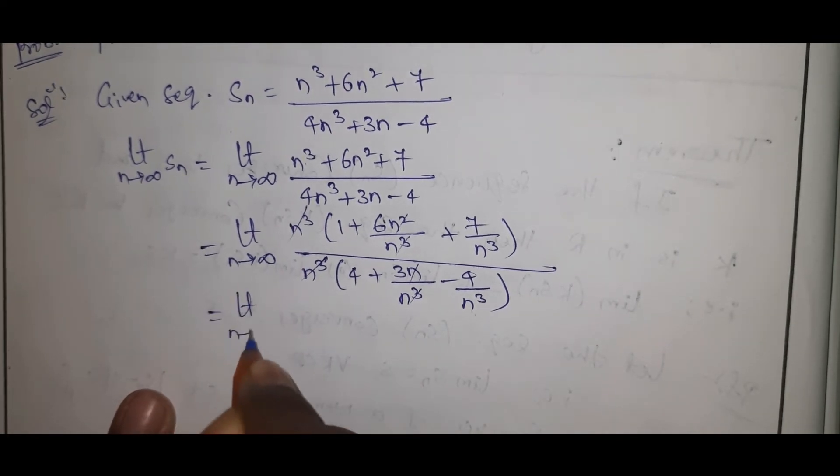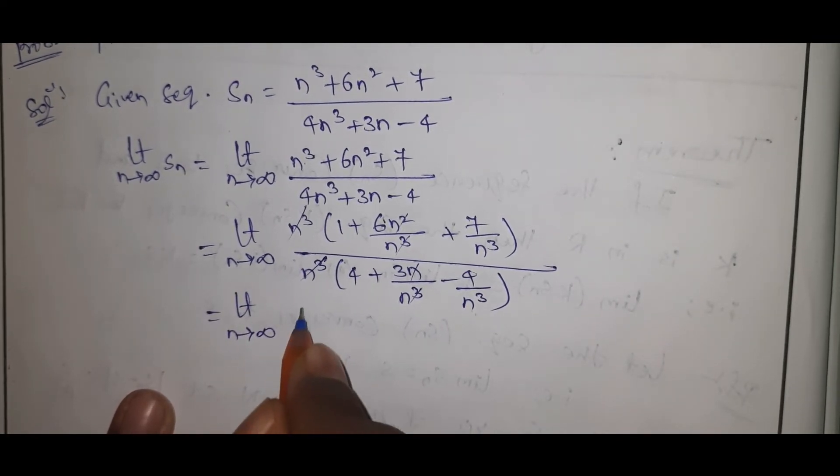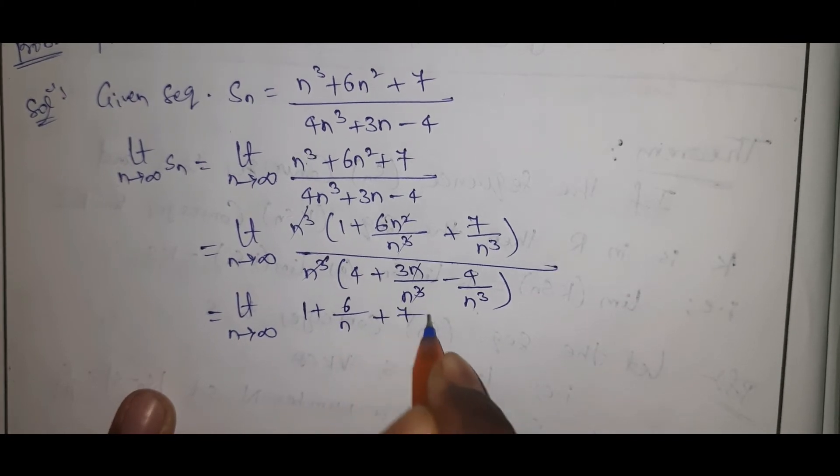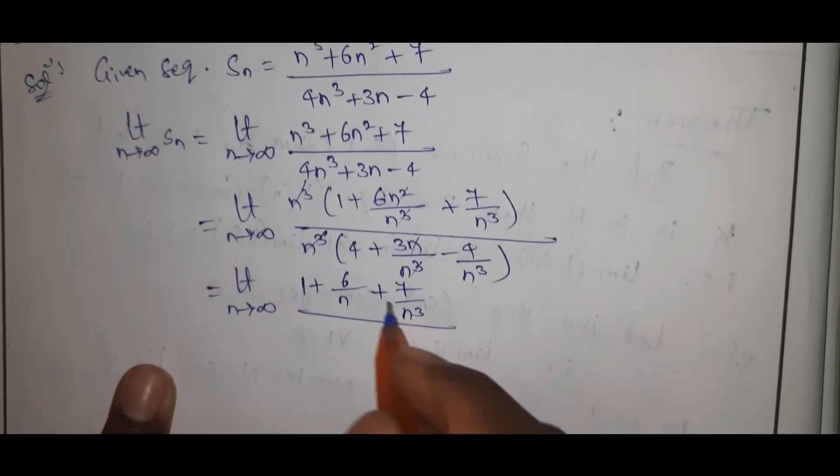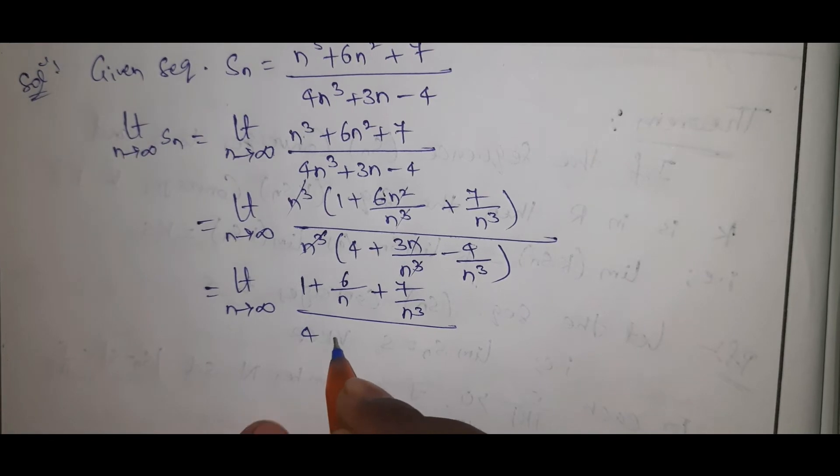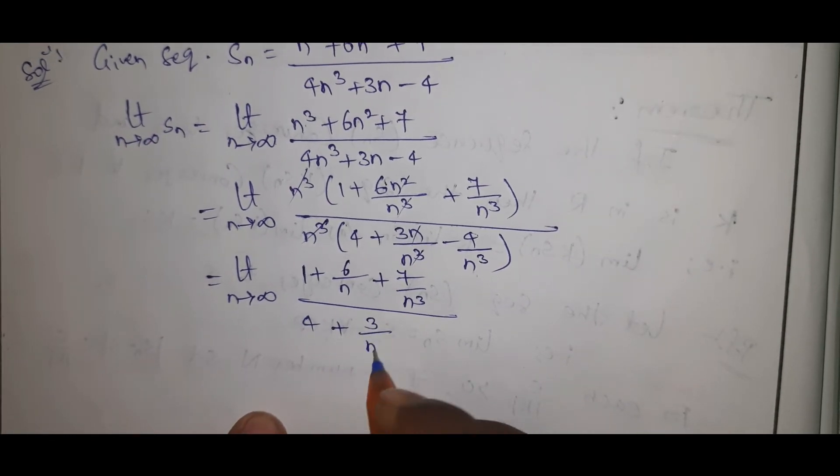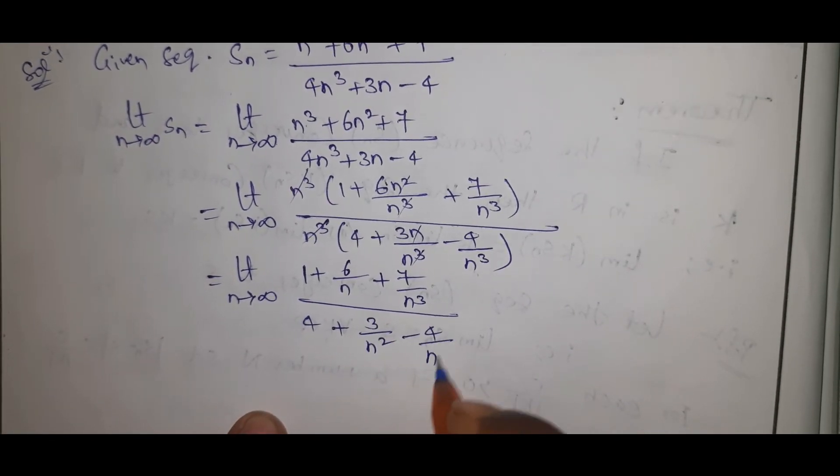See here, limit n tends to infinite: 1 plus 6 by n plus 7 by n cube, that is the numerator, over 4 plus 3 by n square minus 4 by n cube.